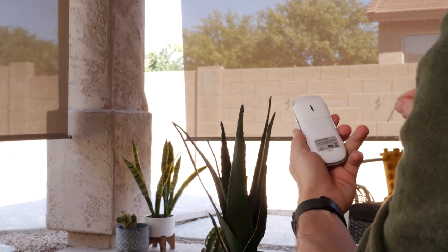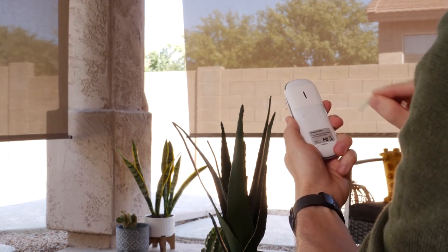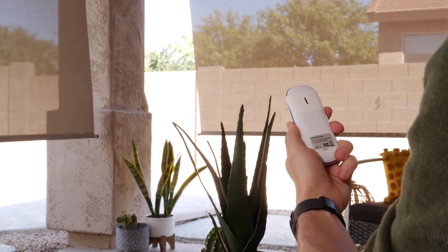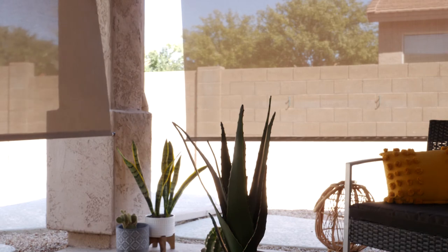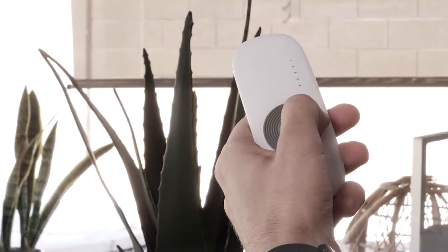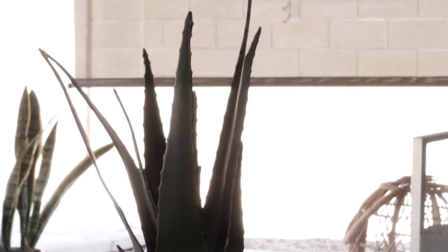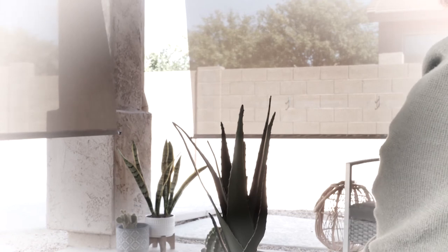Now take the primary remote and press the programming button once. The fabric will jog and the motor will beep several times to confirm the frequency has copied over. If you need to add any more shades to your primary remote, repeat these same steps.